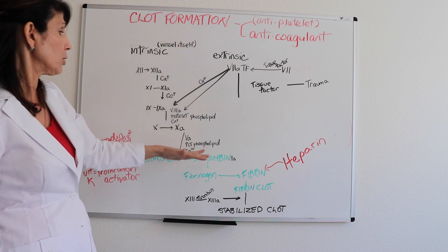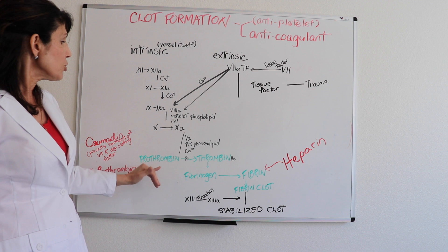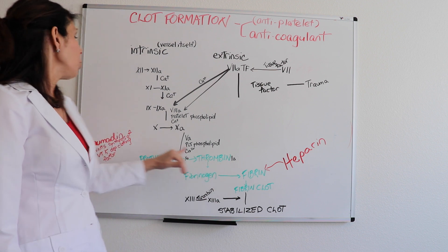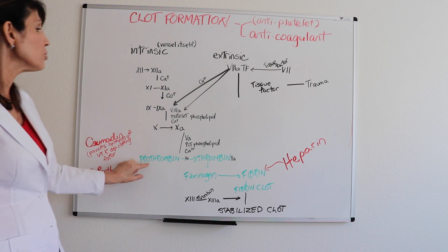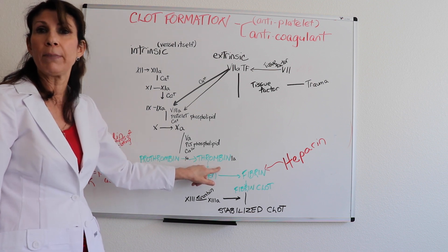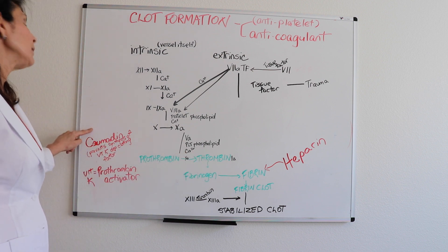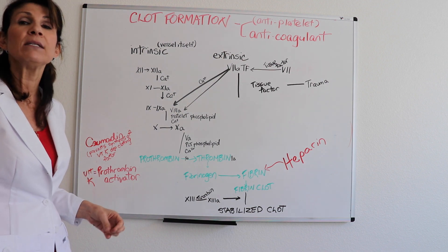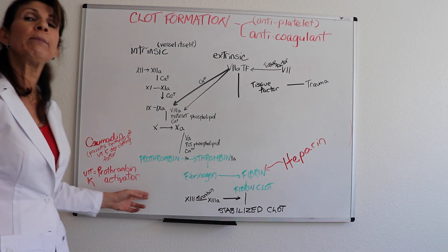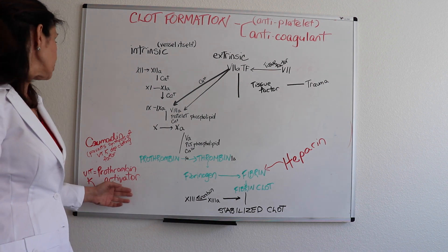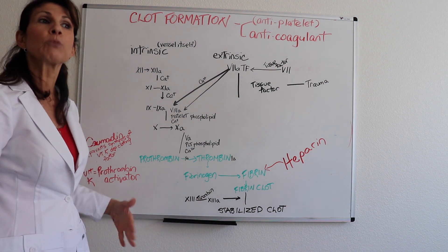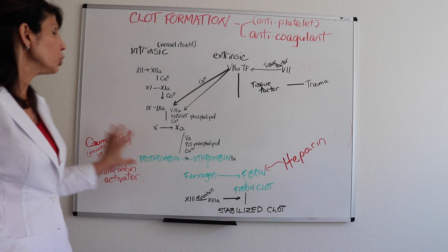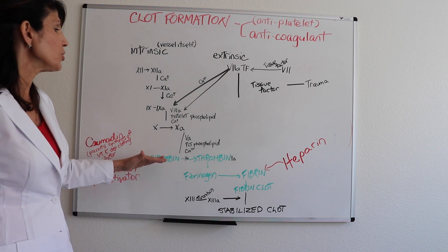After going through the cascade, we eventually have prothrombin being converted to thrombin. When we give Coumadin, we're interrupting thrombin formation — technically, Coumadin prevents the synthesis of the vitamin K-dependent clotting factors. Without vitamin K, you don't get the prothrombin activator, so the clots cannot form. Coumadin interrupts all of that.